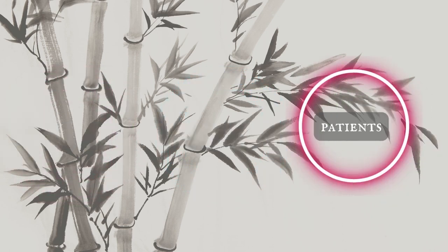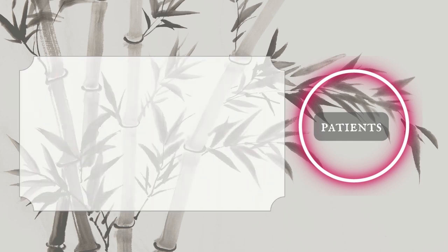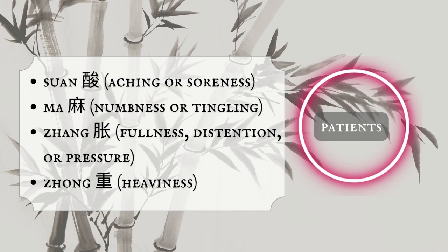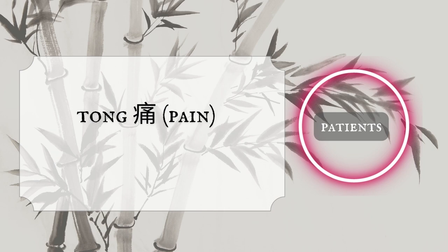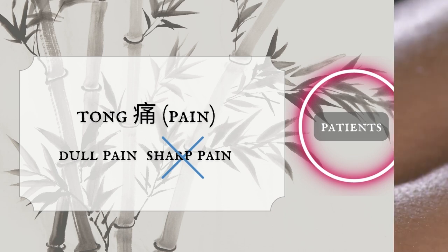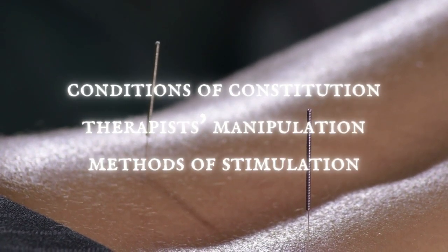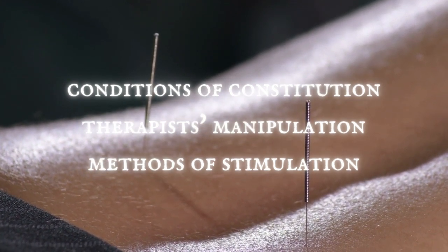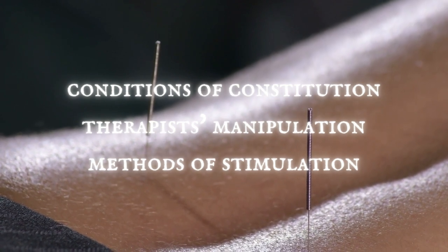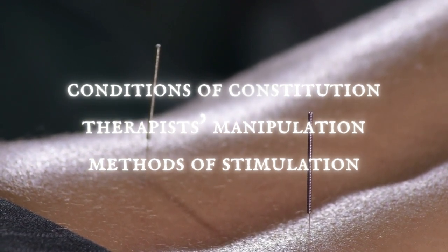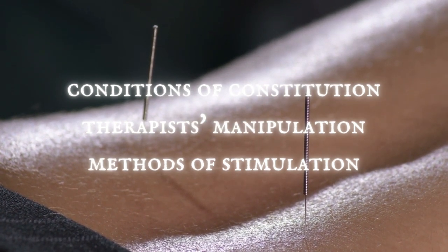Characterization of De Qi found by the patients: multiple sensations around the acupuncture point experienced by patients are often described as Suan — soreness or aching, Ma — numbness or tingling, Zhang — fullness, distension or pressure, and Zhong — heaviness. Besides, Tong — pain — experienced occasionally has not been well characterized. Though pain is considered as De Qi and beneficial to treatment, while sharp pain is not De Qi and is harmful. Patients experience De Qi very differently because of the conditions of the constitution or the therapist's manipulation. De Qi sensation also appears to be different between manual and electrical stimulation, which I will mention later.